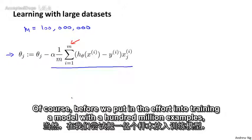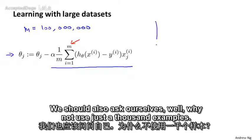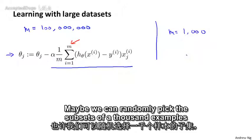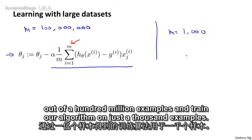Of course, before we put in the effort into training a model with a hundred million examples, we should also ask ourselves, well, why not use just a thousand examples? Maybe we can randomly pick a subset of a thousand examples out of a hundred million examples and train our algorithm on just a thousand examples.